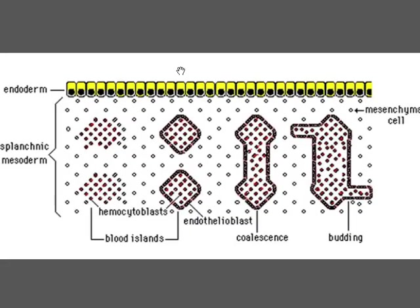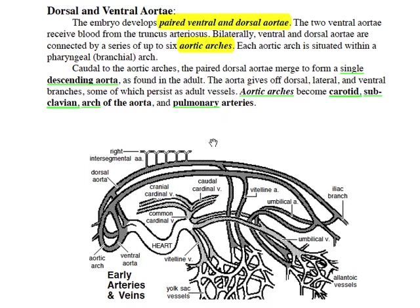This schematic illustrates blood island formation. Here we have splanchnic mesoderm associated with the entoderm. These mesenchymal cells will undergo a transformation, a commitment to become blood-forming cells — hemocytoblasts. They will induce surrounding mesenchymal cells to form endothelial blasts, forming blood islands. They enlarge and coalesce and then bud to form early vessels, as shown below.